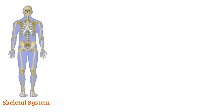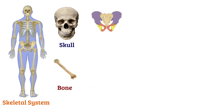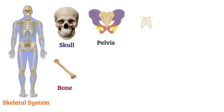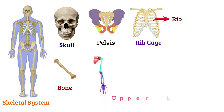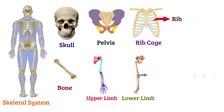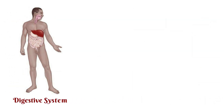Skeletal system: skull, bone, pelvis, ribcage, rib, upper limb, lower limb, joint, spine, skeleton. Digestive system.